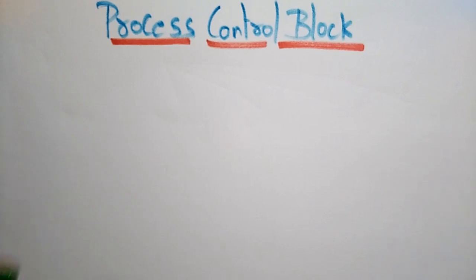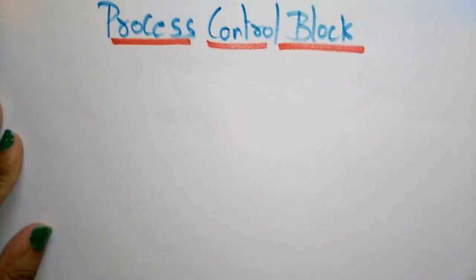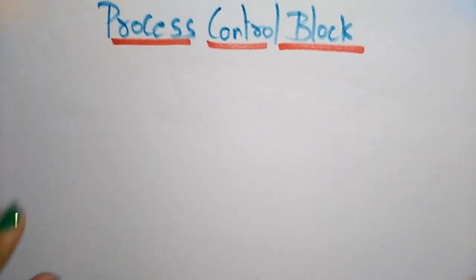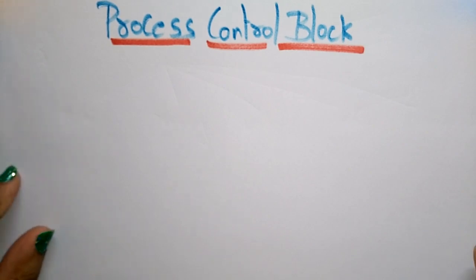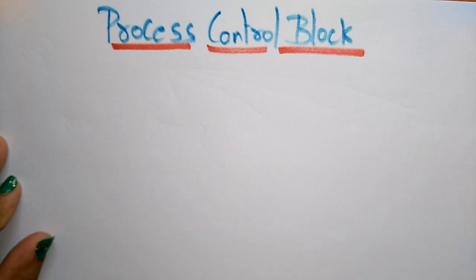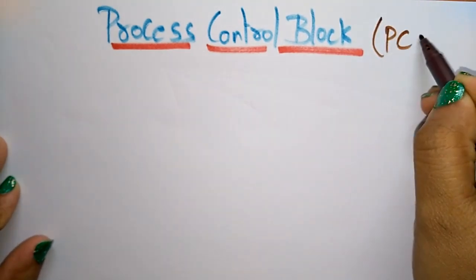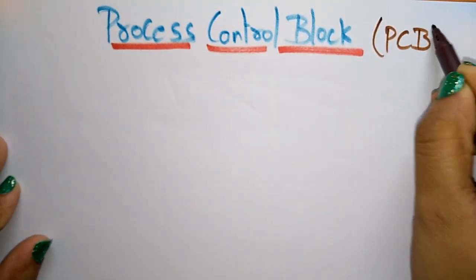Students, now coming to the next topic: the Process Control Block. In the previous video I explained about the process states, the five states that are present in a process. Now let us see what is this Process Control Block, PCB.